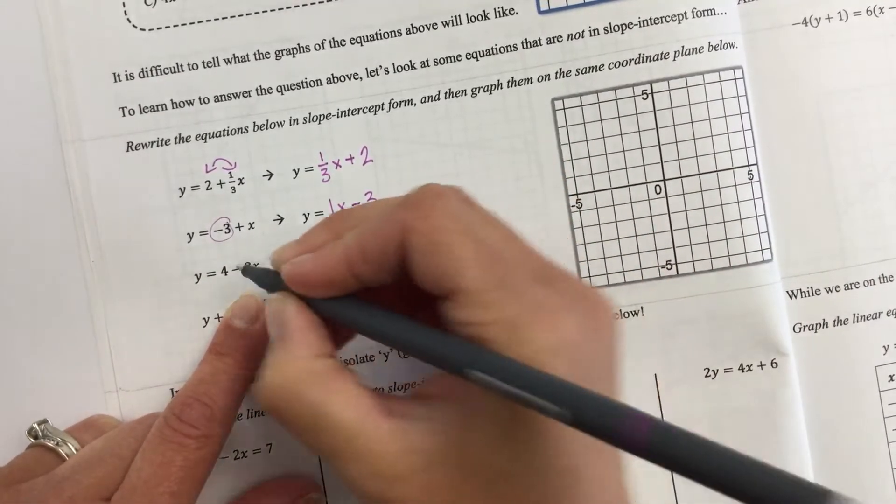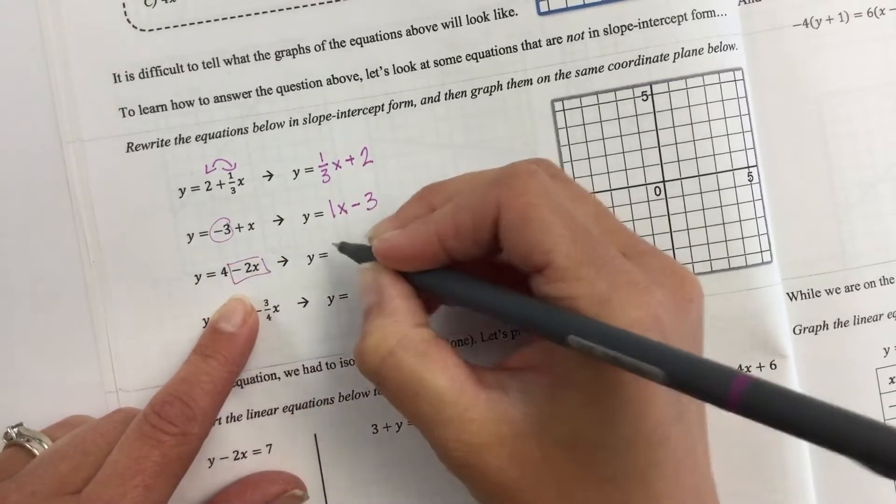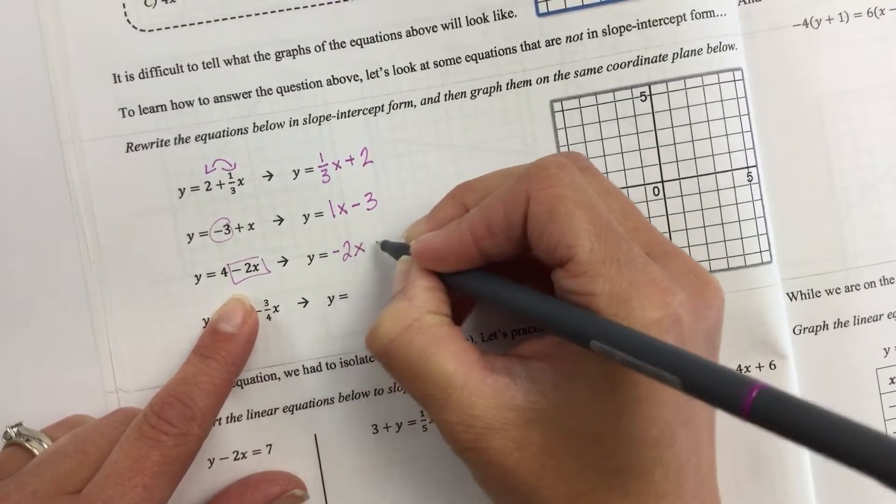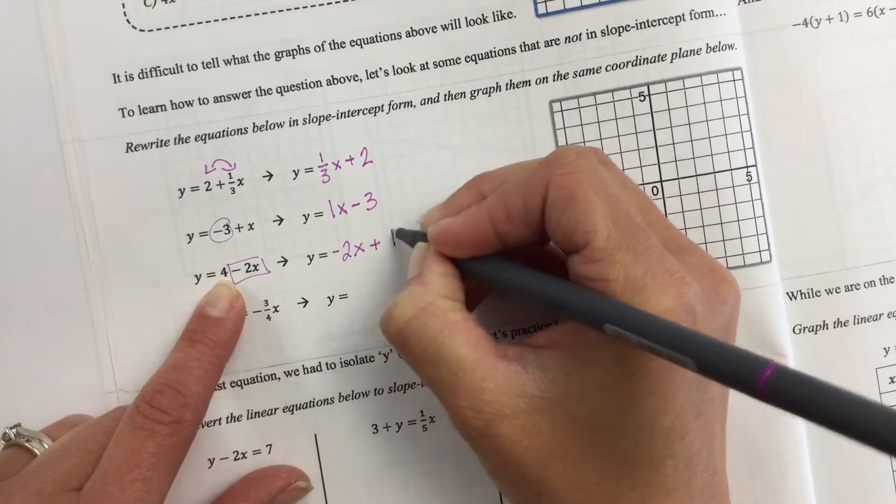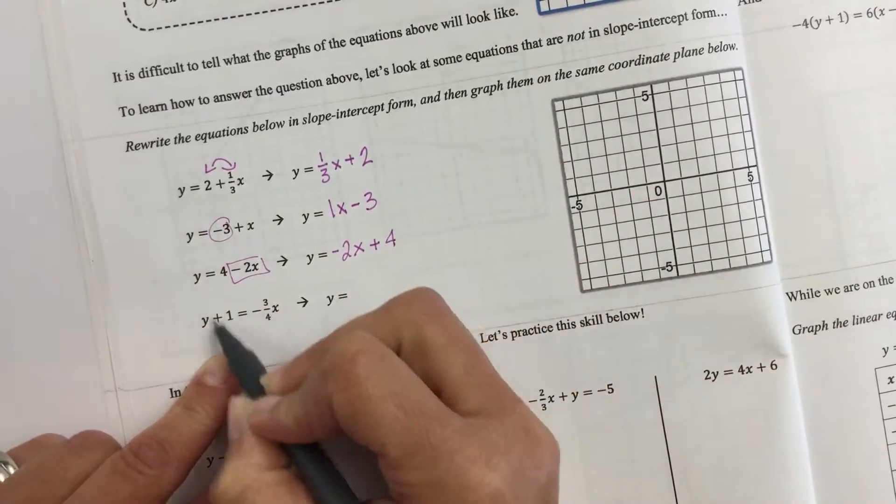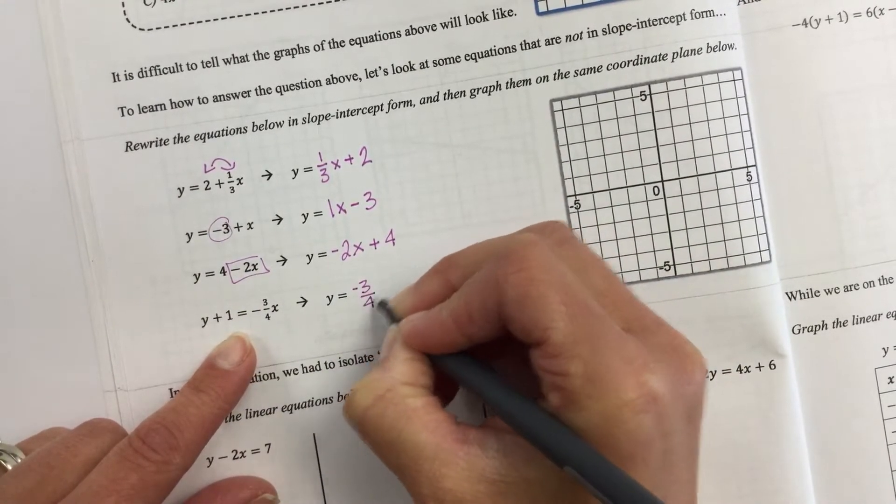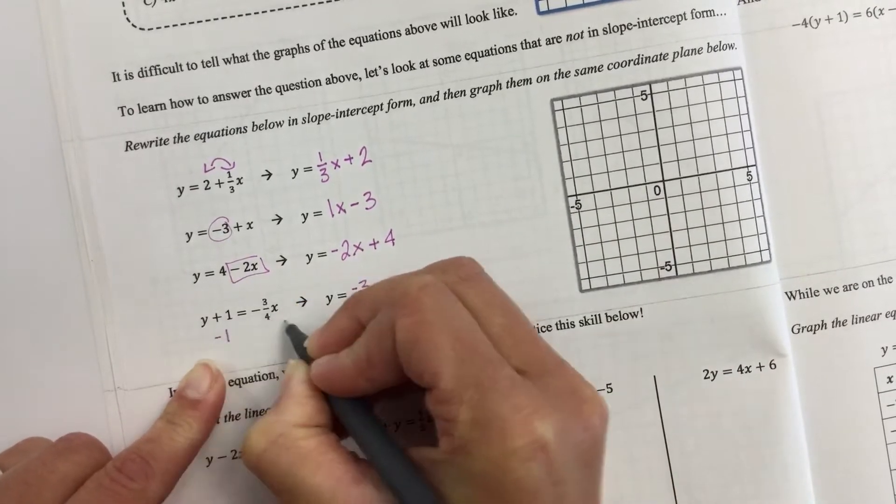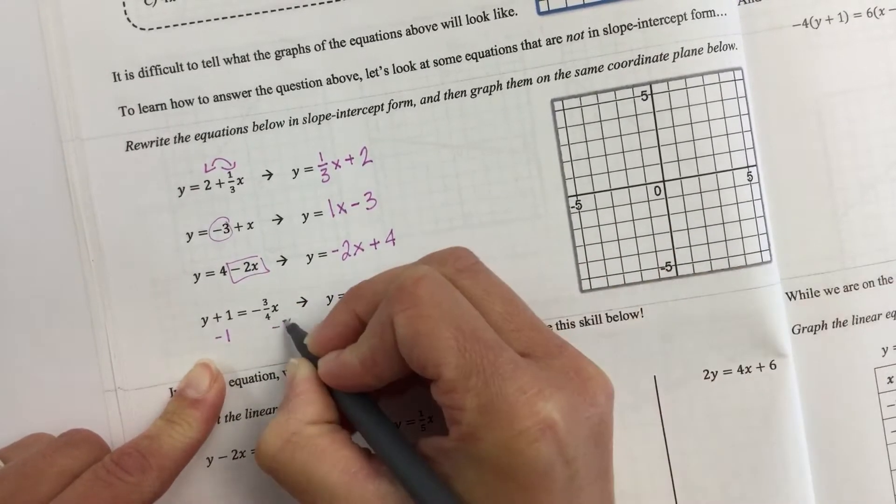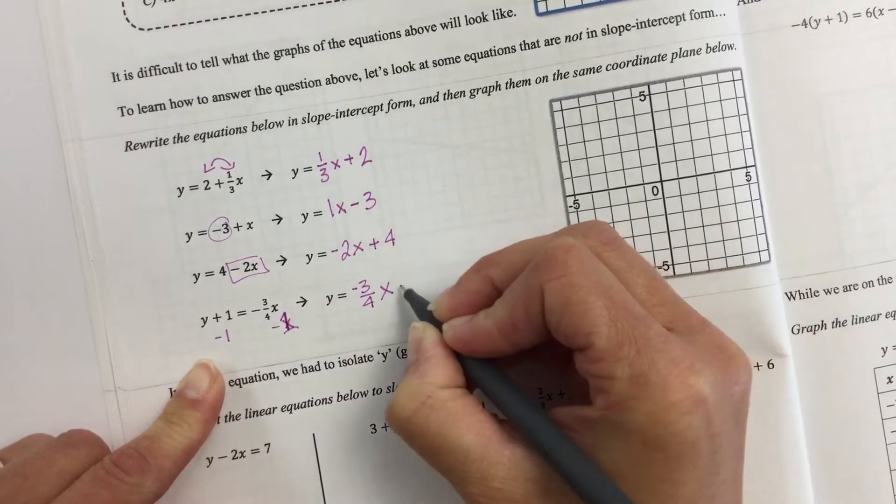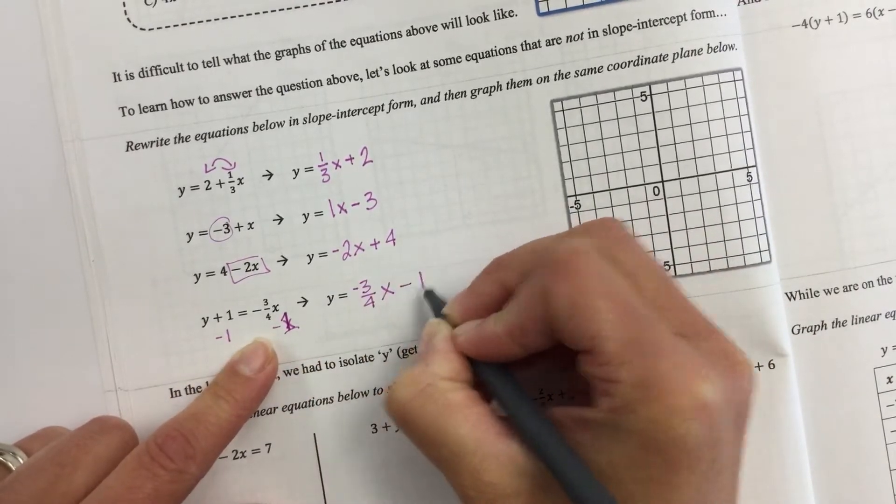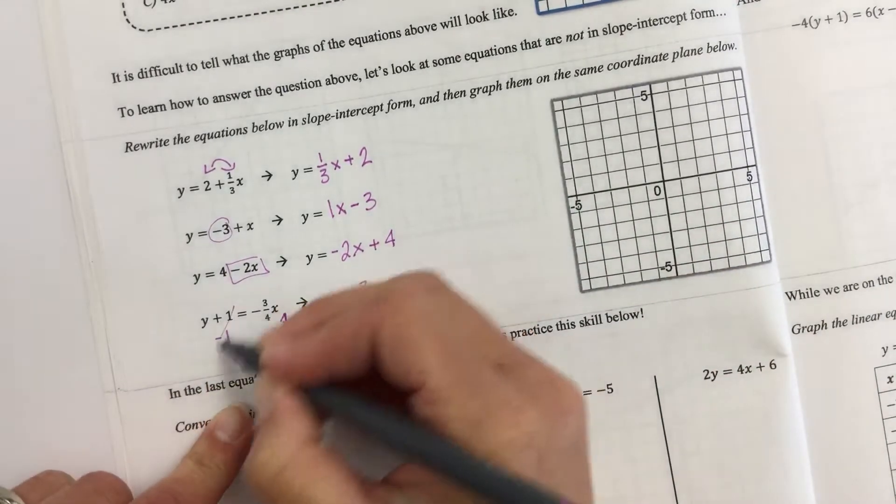Same thing here, except this negative is going to go with the 2x. So this is going to be y = -2x + 4. And then this one, the 1 is over here. I'm going to leave that 3/4x here. And then remember, to move anything to the other side, you add or subtract it. So this would be y = 3/4x - 1.